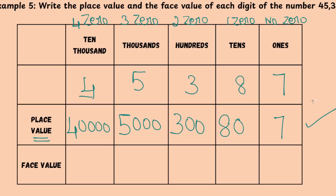This is known as place value. Then what is the face value? The face value of 4 is 4, face value of 5 is 5, face value of 3 is 3, face value of 8 is 8, and face value of 7 is 7. There are no changes — the answer will be the same for face value.